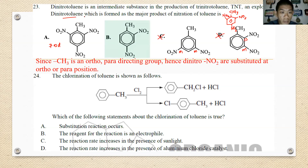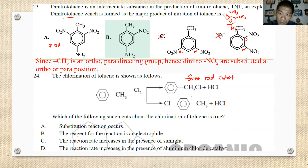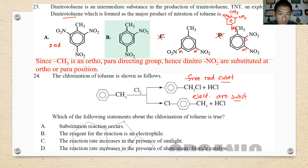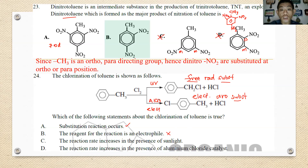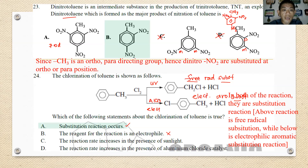Number twenty-four: the chlorination of toluene is shown in two pathways. The first is a free radical substitution reaction; the second is an electrophilic aromatic substitution reaction. Both are substitution reactions — so statement A is true. B is wrong because only one pathway uses an electrophile. C is wrong because only the free radical pathway requires sunlight/UV. D is wrong because only the EAS pathway uses AlCl3. The best answer is A.